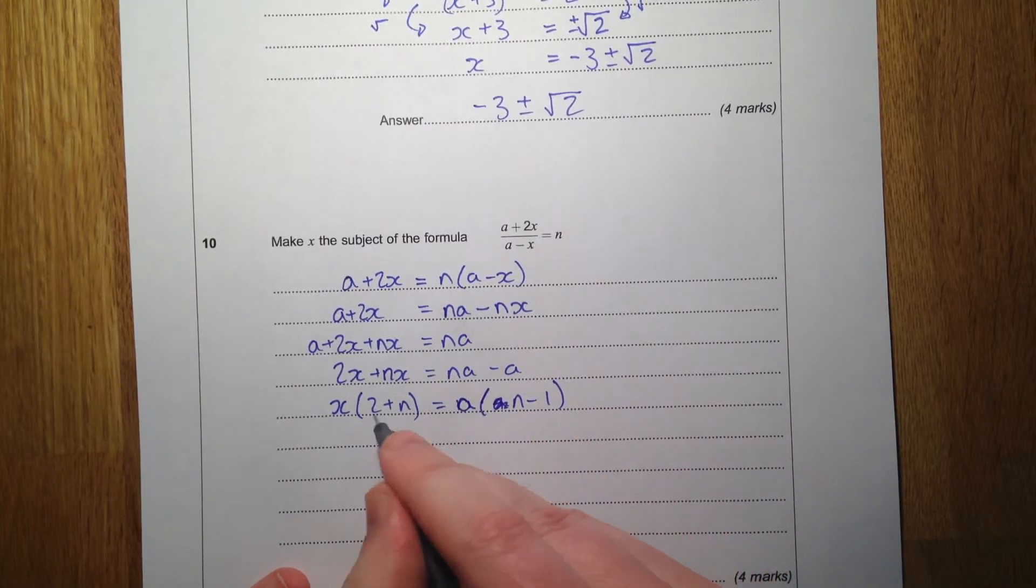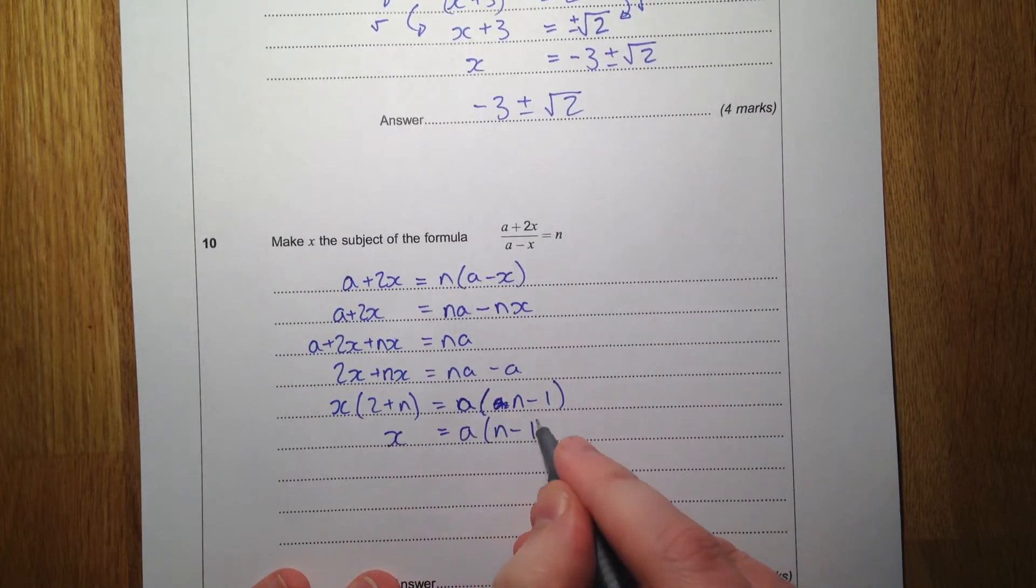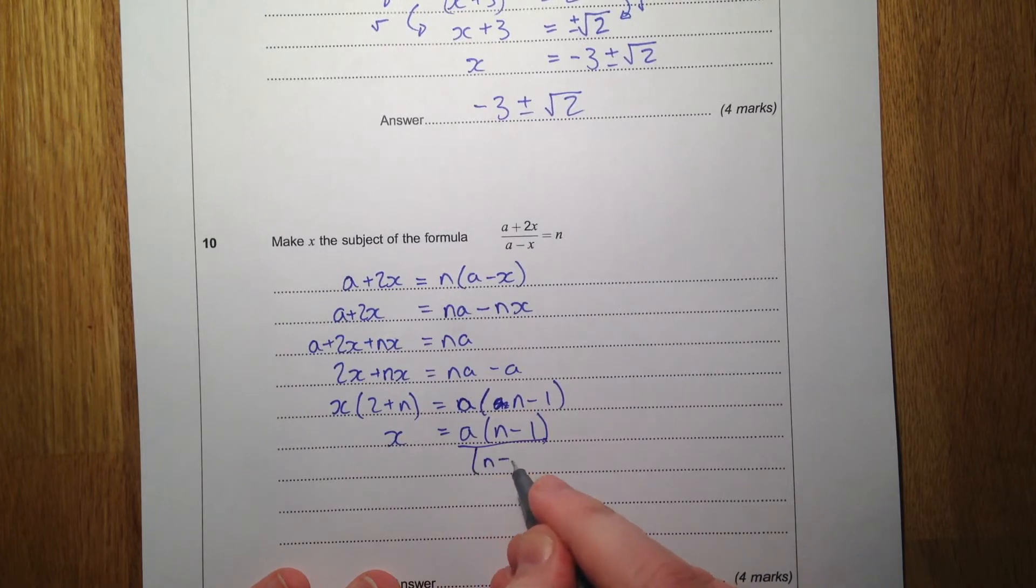And then divide by this 2 plus n. And I'm going to call it n plus 2 rather than 2 plus n.